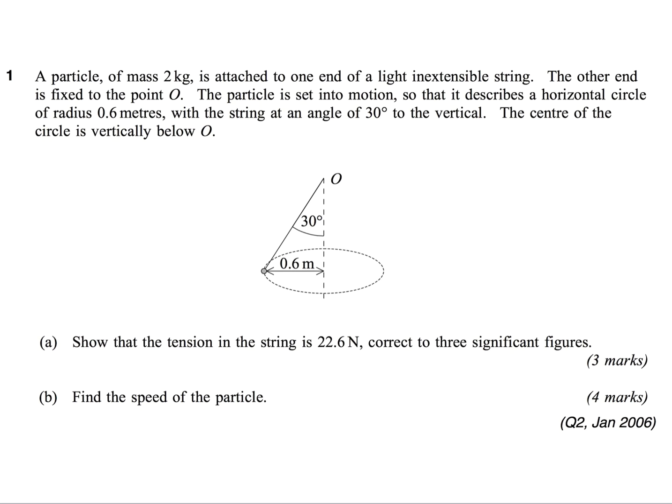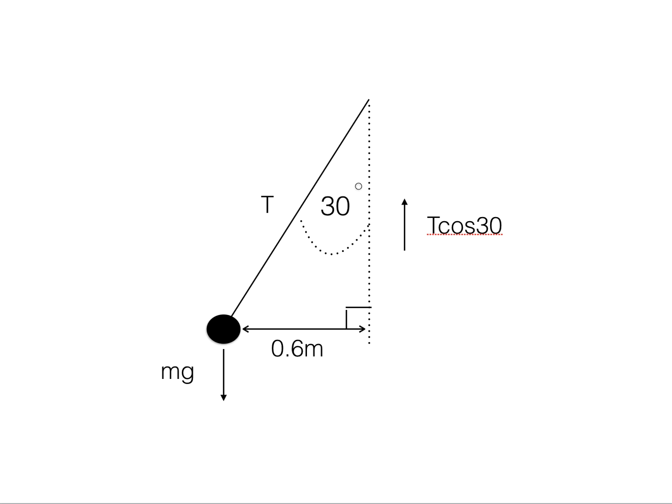For part A, show that the tension in the string is 22.6 N, correct to three significant figures. OK, in this question we want to find T, that is the tension in the string. And so we need to construct an equation where it is the only unknown variable.